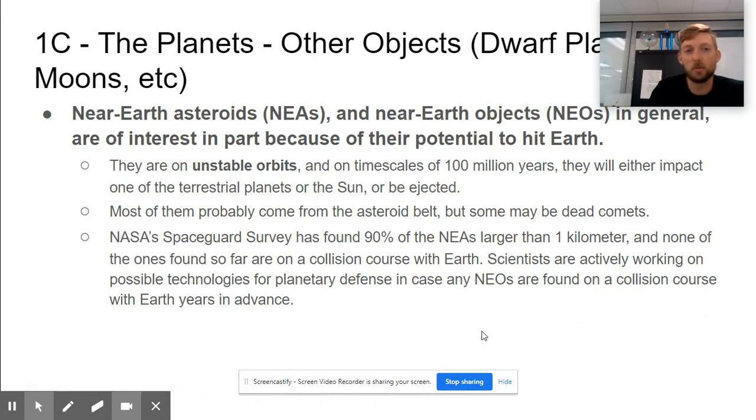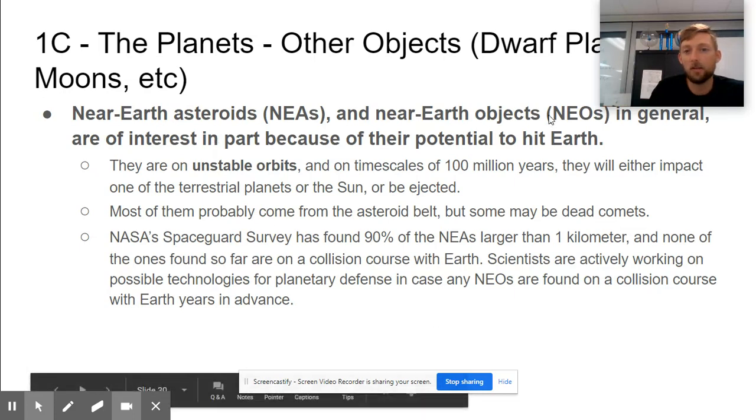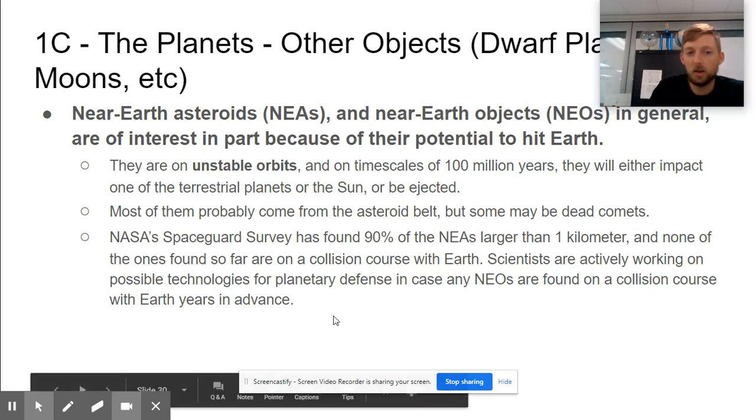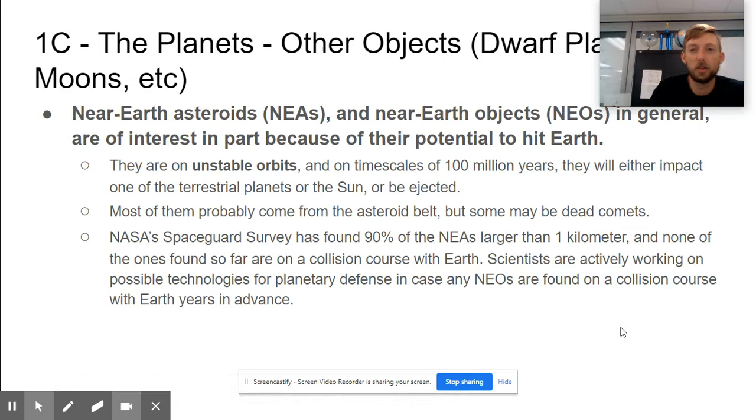NASA's Spaceguard survey has found 90% of the near-Earth asteroids larger than a kilometer, and none so far are on an Earth collision course, which is great. Hopefully we would have heard about it, because you can't do anything—you just have to sit there and watch it come.